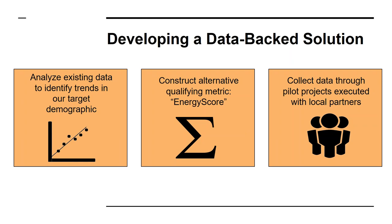The second step is to build an alternative qualifying metric called the energy score — something developers and financiers could use instead of the FICO score, which Solstice believes would be both more accurate than FICO and more inclusive, enabling low to moderate income households to participate in community solar. The hypothesis is that utility payment history will be a sizable portion of the energy score, since a monthly payment for energy, telecom, or even rent would correlate more closely with whether someone can make a monthly community solar payment than a FICO score might. Thin files and stale records would no longer be barriers.